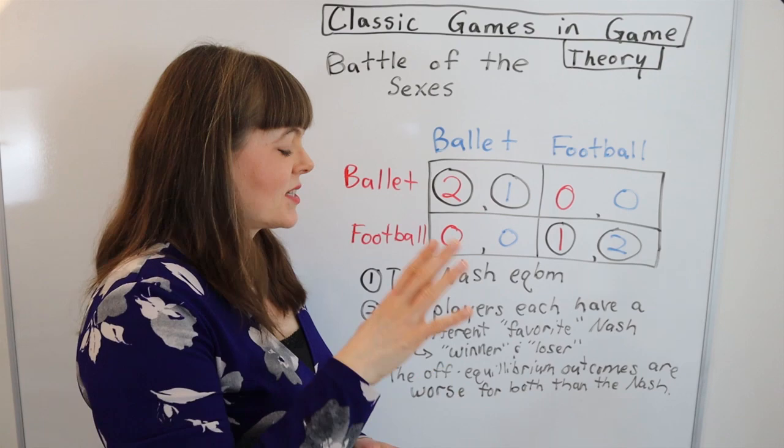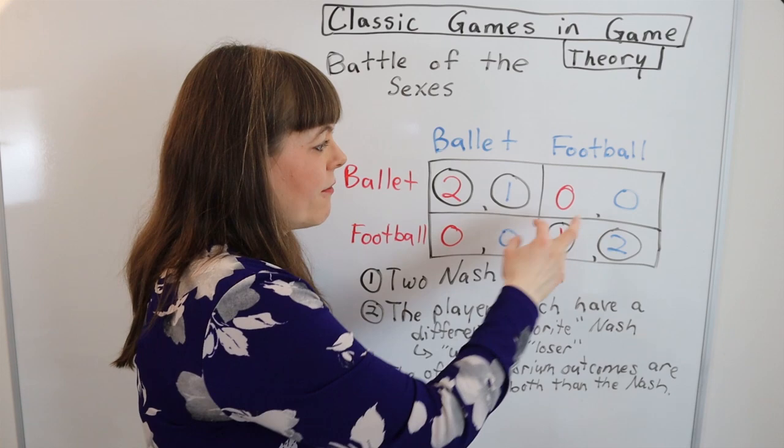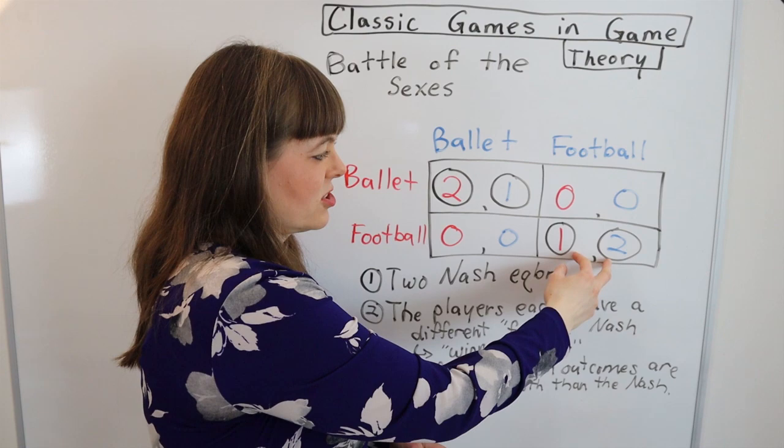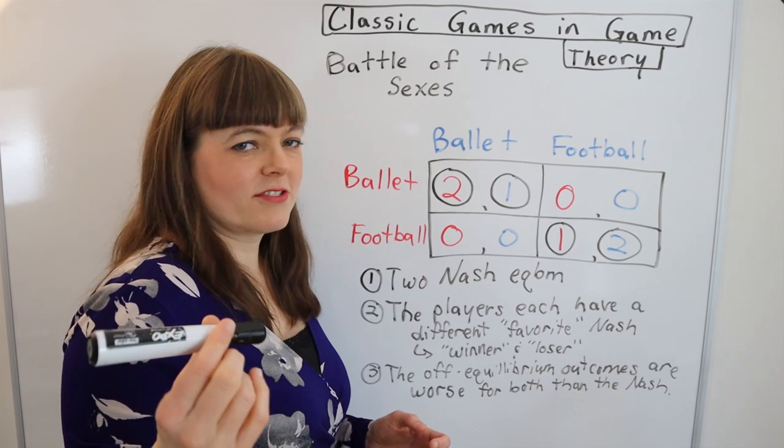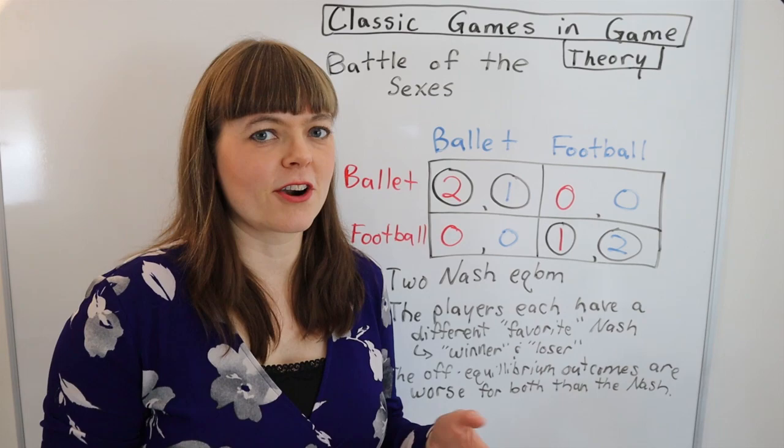So if you want to distinguish it from the game of chicken, you need this third criterion: the off-equilibrium outcomes are actually worse for both players than either Nash equilibrium, meaning they both really want to avoid these off-equilibria. In the game of chicken, that's not necessarily going to be the case. So the off-equilibrium does matter — it matters for how games play out. That's a quick overview of battle of the sexes in game theory.